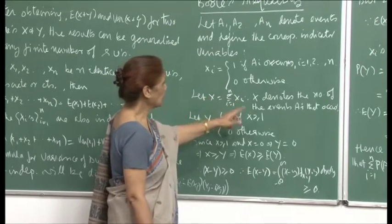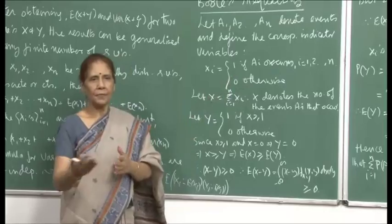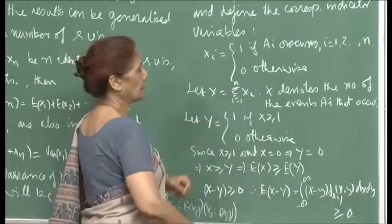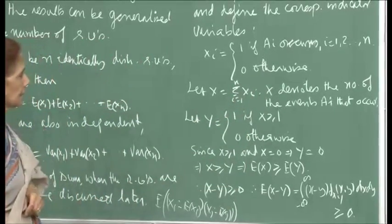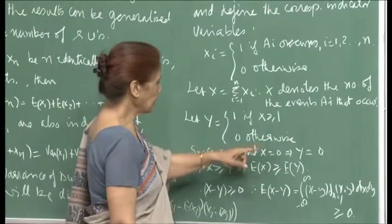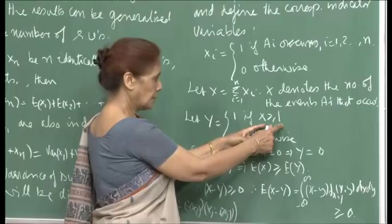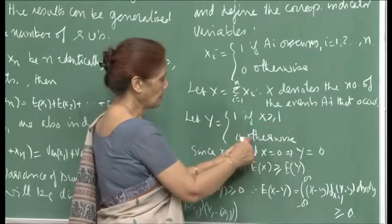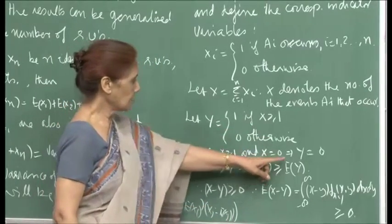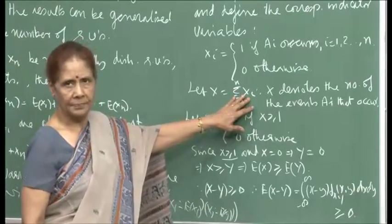In words, X denotes the number of the events Ai that occur, because Xi = 1 if Ai occurs. If capital X equals 5, that means 5 of the Ai events have occurred. Define another variable Y = 1 if X ≥ 1, and 0 otherwise. So if X is 1 or greater, Y is 1; if X is 0, Y will be 0.